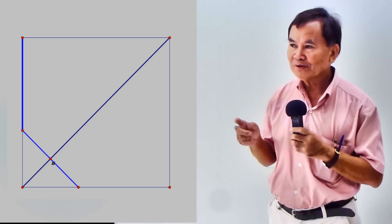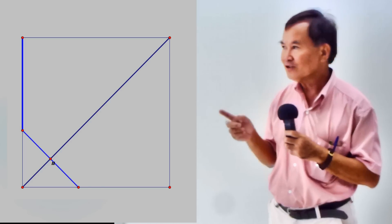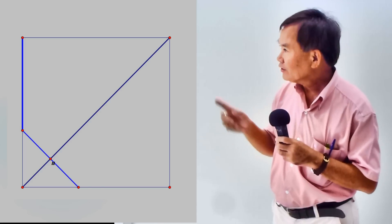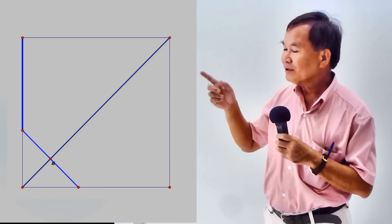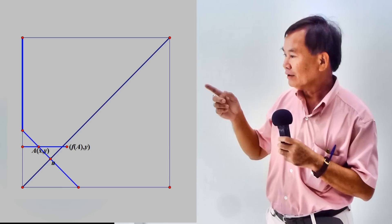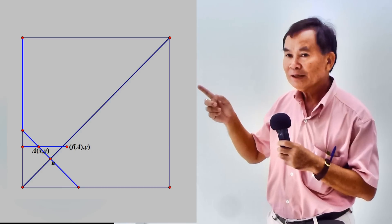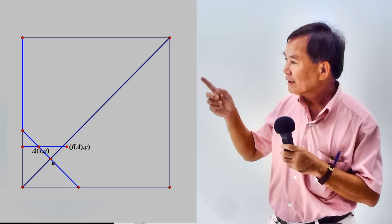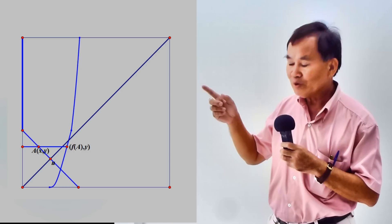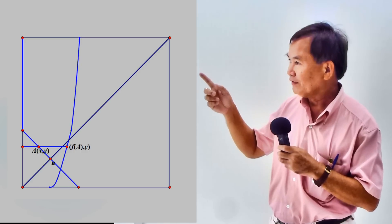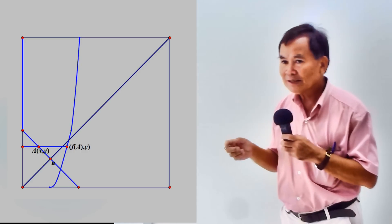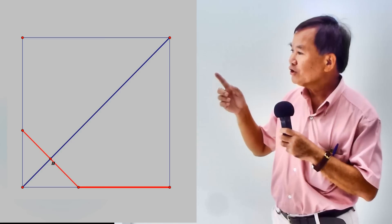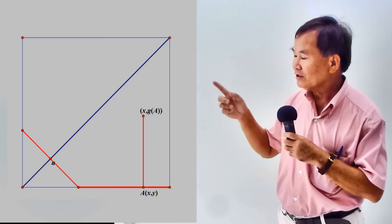Next, we will draw the graphs of function f and function g. On this blue line, we choose any point (x,y) and compute the point. If we move point a along this blue line, we will obtain the graph of function f. Similarly, we can construct the graph of function g.